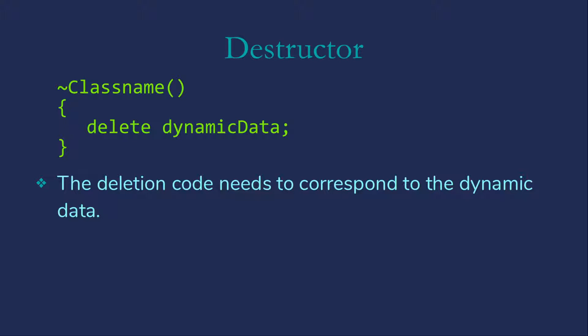The destructor is named for the class, just like a constructor, except that we put a tilde in front of the class name. It never has any parameters, which should make sense since we will never call this method. It's called automatically, so there's no way to provide an argument. All that the destructor will do is to delete any dynamically allocated memory that this object controls.